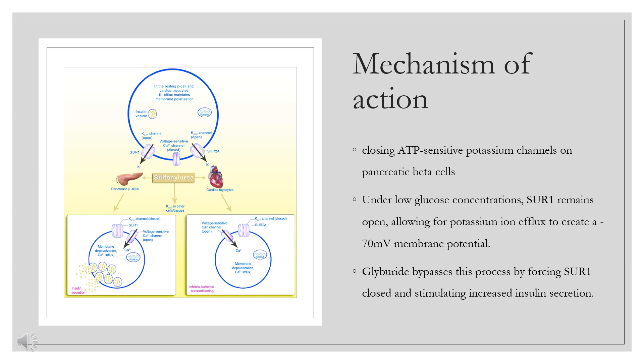Mechanism of Action. Glyburide belongs to a class of drugs known as sulfonylureas. These drugs act by closing ADP-sensitive potassium channels on pancreatic beta cells. The ADP-sensitive potassium channels on beta cells are known as sulfonylurea receptor 1, SUR1. Under low-glucose concentrations, SUR1 remains open, allowing for potassium ion efflux to create a –70 mV membrane potential. Normally SUR1 closes in response to high-glucose concentrations; the membrane potential of the cells becomes less negative, the cell depolarizes, voltage-gated calcium channels open, calcium ions enter the cell, and the increased intracellular calcium concentration stimulates the release of insulin-containing granules. Glyburide bypasses this process by forcing SUR1 closed and stimulating increased insulin secretion.